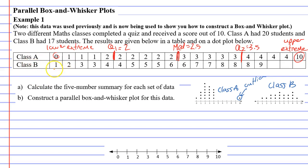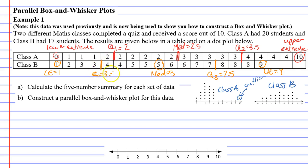For class B we have 17 scores. Counting through 9 values to the middle — this is the median — then 8 more values. The median for class B is 5. Quartile 3 is 7.5, the upper extreme is 9, the lower extreme is 1, and quartile 1 is 3.5. So we've got our five number summary for class A and class B.